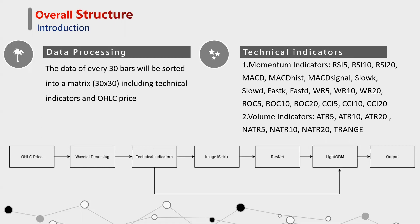In this case, it uses 30 bars of data to predict the change rate between the 35th bar and 30th bar. Meanwhile, 90 momentum indicators and 7 volume indicators are used with OHLC price to follow the measures. As for the structure of the whole model: first, all the OHLC price will be denoised through the wavelet method. Then, calculate the technical indicators according to the denoised values. The formed matrix will be put into ResNet-CNN for training and feature extraction. After that, the extracted image features will be put into LightGBM together with technical indicators for training to get the final results.